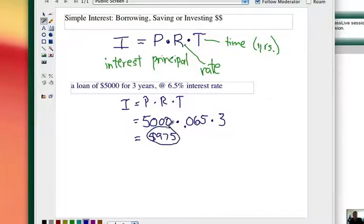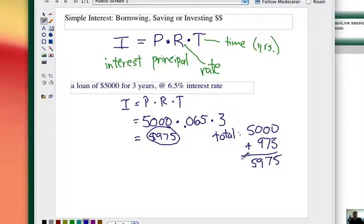Now that's just the interest. What's the total to pay back? Well, that would be your $5,000 that you borrowed in the first place, plus the $975 that you have to pay extra at the end of the three years. So, of course, that would be $5,975 simple interest total with the principal.